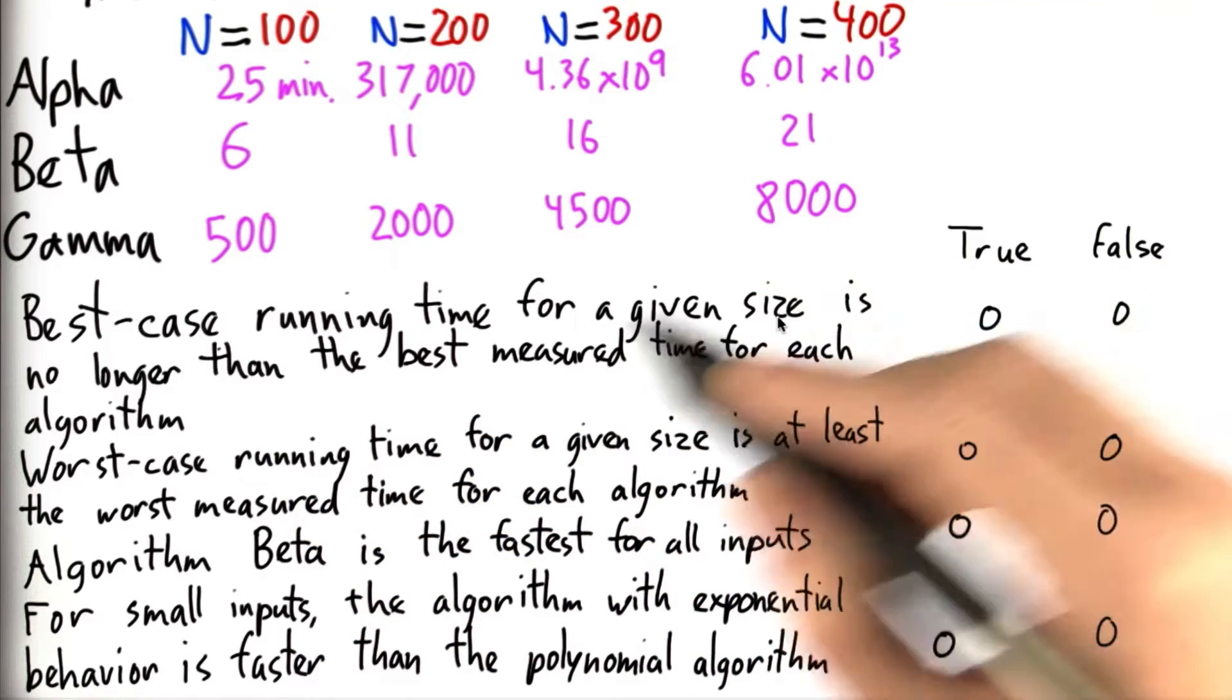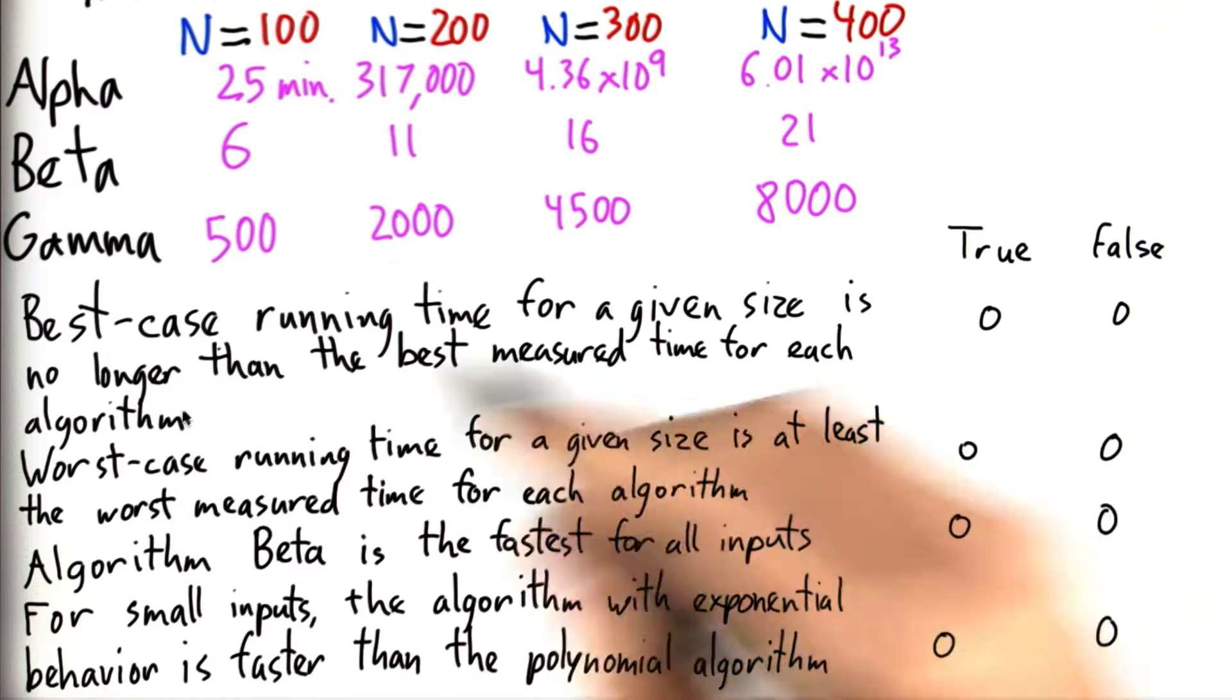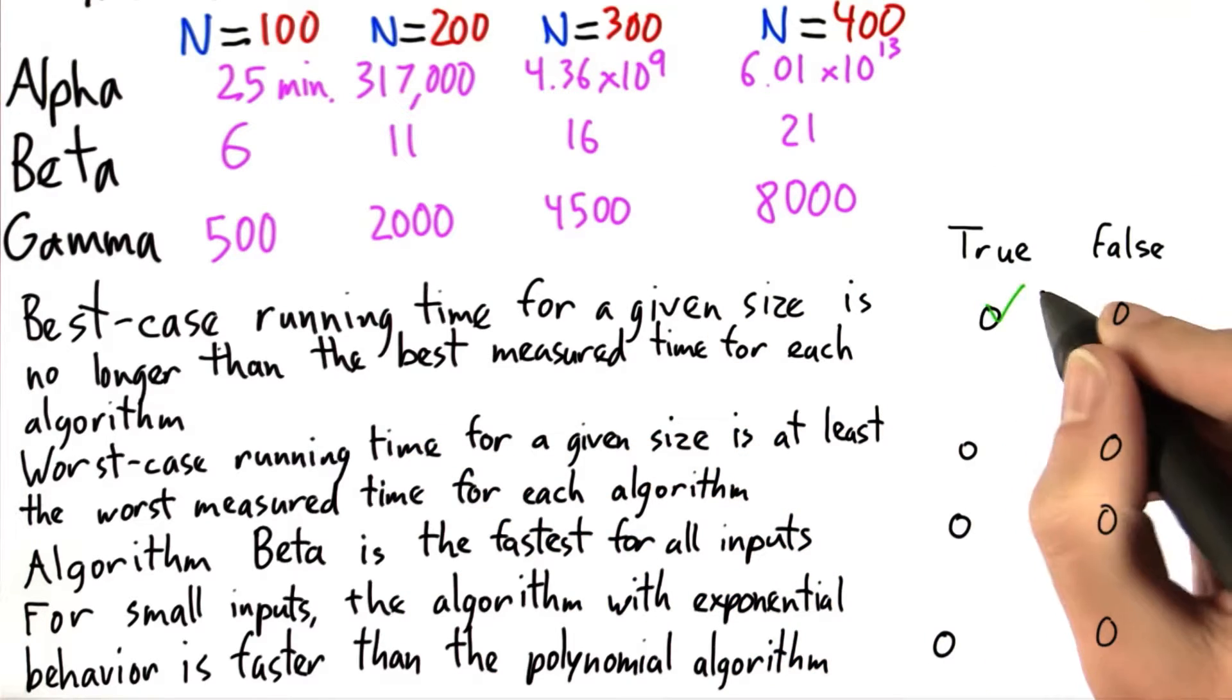So the first question: the best case running time for a given input size is no longer than the best measured time for each algorithm. This is true.